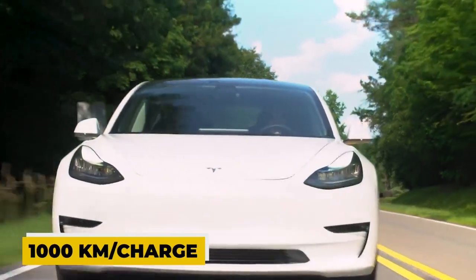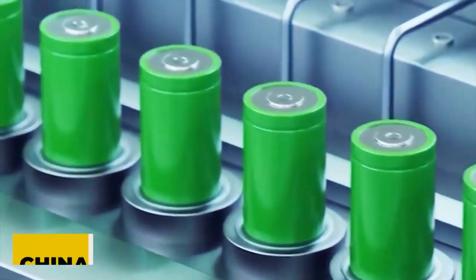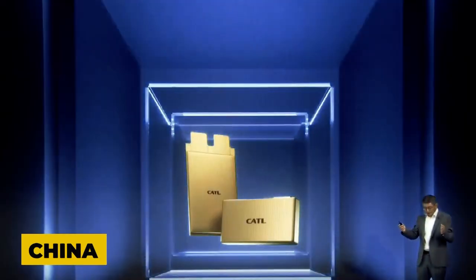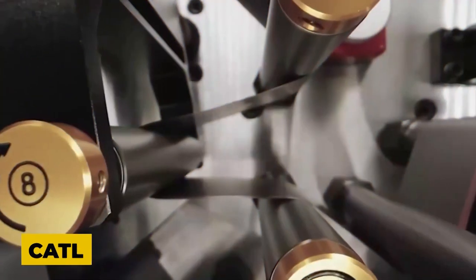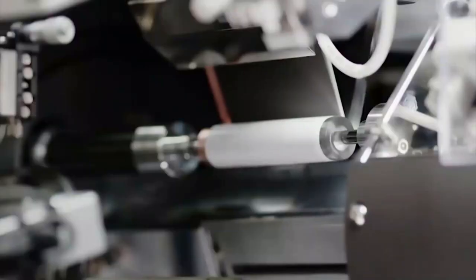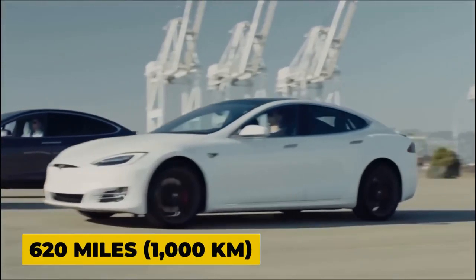A record-breaking 1,000 kilometers per charge electric vehicle battery was unveiled in China. The largest EV battery manufacturer in the world, CATL, has now said that it will begin manufacturing its most recent EV battery, which supports a range of up to 620 miles, 1,000 kilometers.